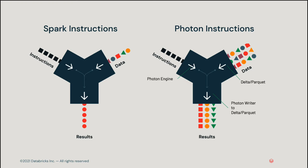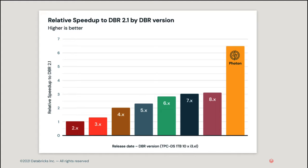Photon is compatible with Spark APIs, implementing a more general execution framework for efficient processing of data. With Photon, you see increased speed for use cases such as data ingestion, ETL, streaming, data science, and interactive queries directly on your data lake. As Databricks has evolved over the years, query performance has steadily increased, powered by Spark and thousands of optimization packages as part of the Databricks runtime. Photon offers two times the speed per the TPC-DS 1TB benchmark compared to the latest DBR versions.